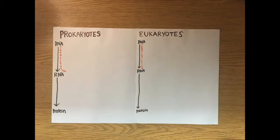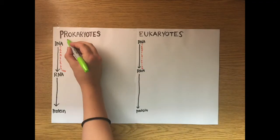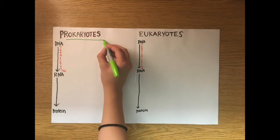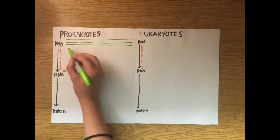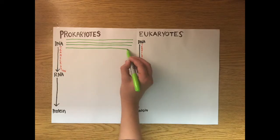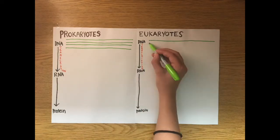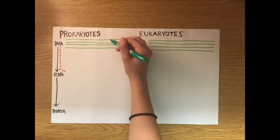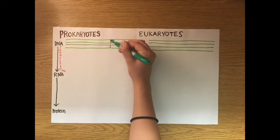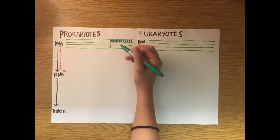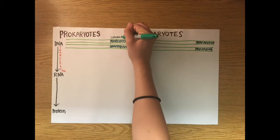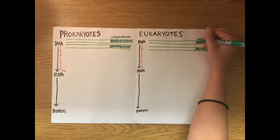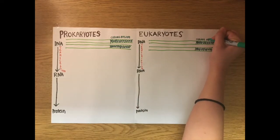Prokaryotes and eukaryotes obviously start with a double-stranded piece of DNA, which I'm drawing currently. The darker regions that I'm drawing are known as the coding region. We'll be focusing initially on the region before the coding region.